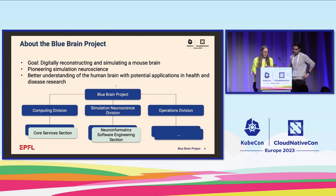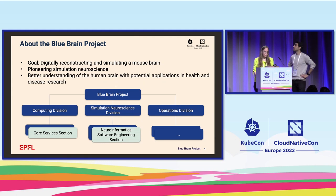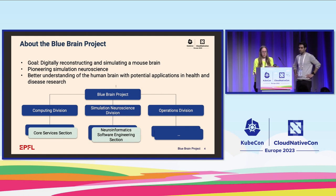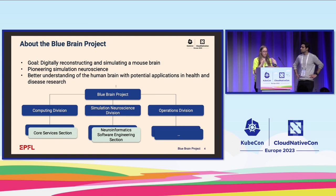A little bit about our organization: the Blue Brain Project. The ultimate goal is to digitally reconstruct and simulate the mouse brain and also pioneer simulation neuroscience. We hope that it will better help the understanding of the human brain, also with some potential applications in health and disease research. As you can see from the organization chart, we are coming from different parts of the organization, so this was done as a collaboration.